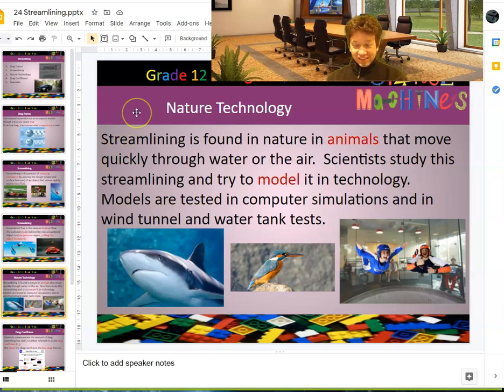And a lot of times we actually look towards nature, because evolution has created great ways of streamlining. A shark is perfectly streamlined to be moving through the ocean. That's why they're so fast. Same with birds.